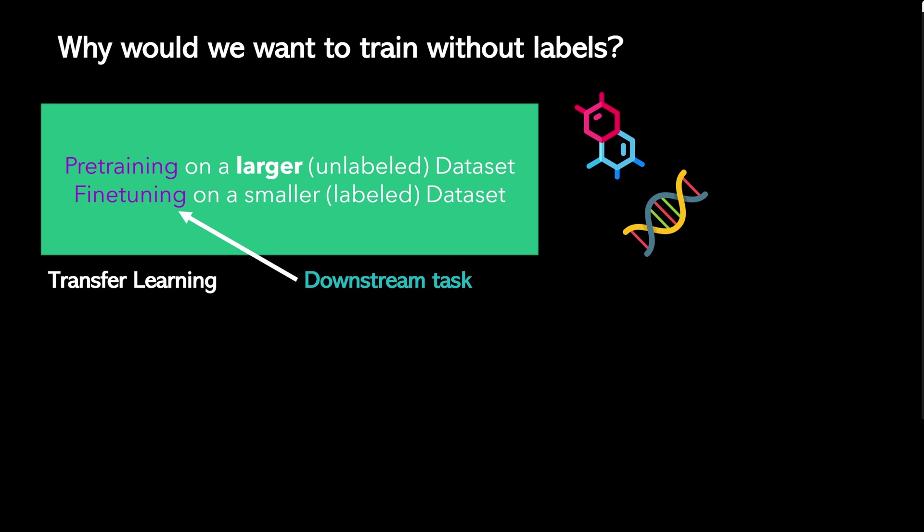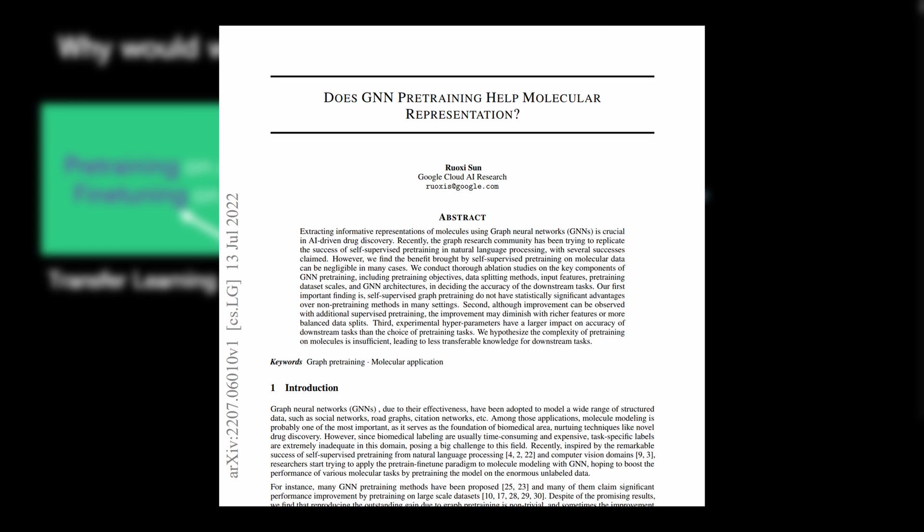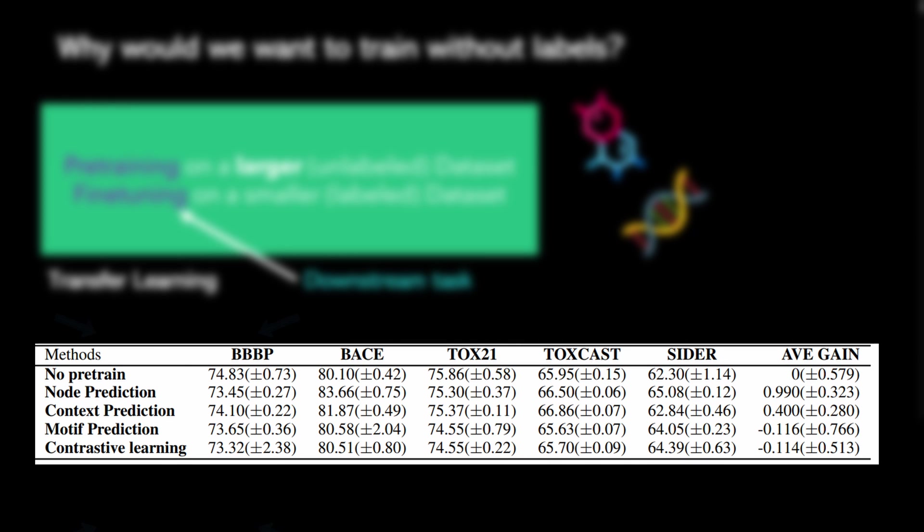One important note, it might not always make sense to pre-train graph representations. For example, this work analyzed some of the GNN pre-training approaches on molecular graphs. It came to the conclusion that no significant improvement could be found on downstream tasks. The paper also discusses some potential reasons for that in case you're interested.